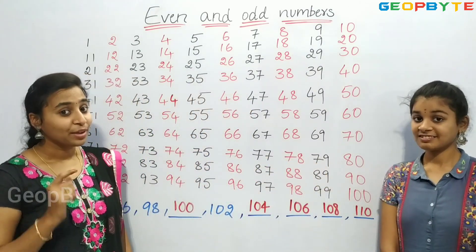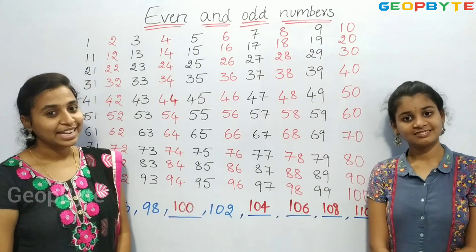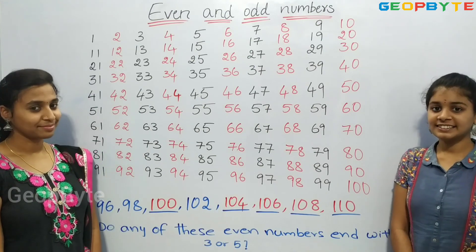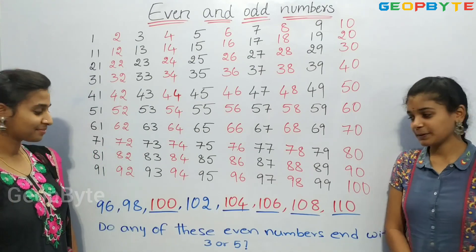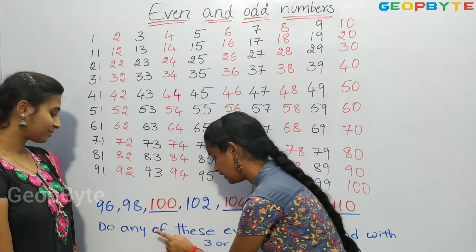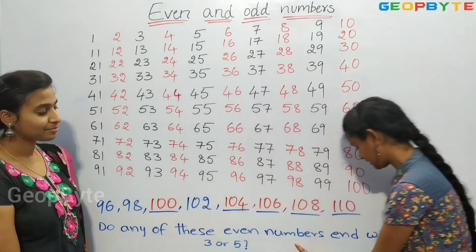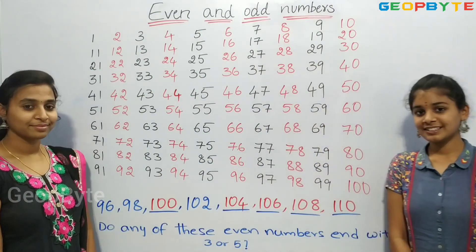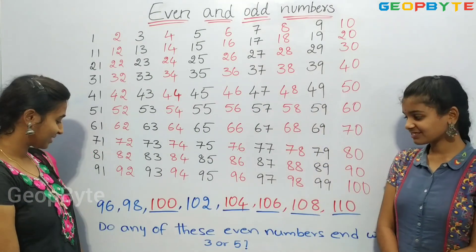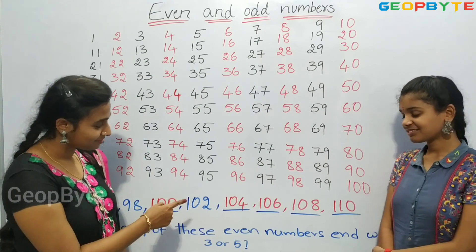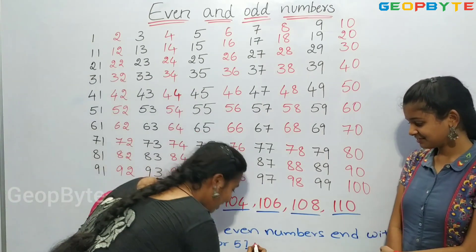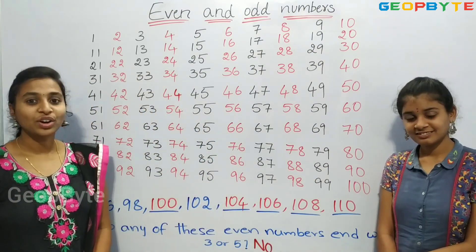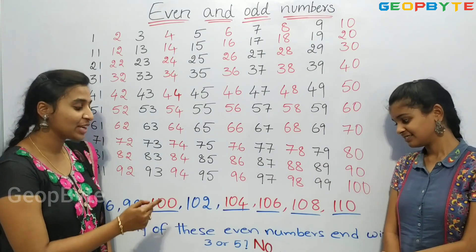Children, if you observe, these numbers are even numbers. Now let us see this question: do any of these even numbers end with 3 or 5? Let us see. No — these even numbers do not end with the number 3 or 5.